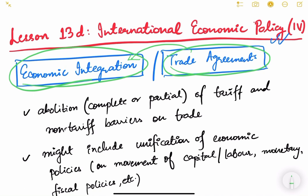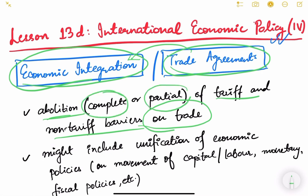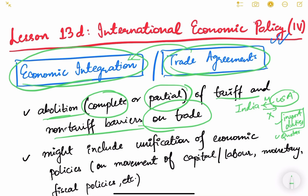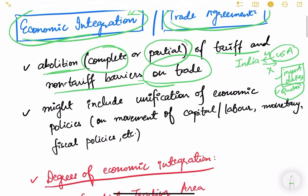Trade agreements essentially abolish the tariff and non-tariff barriers on trade — it can be complete or partial abolition. For example, if India was trading with the USA and there were import duties like custom duties and non-tariff barriers like quotas, then a trade agreement would reduce import duties on products from the USA or abolish the quotas.